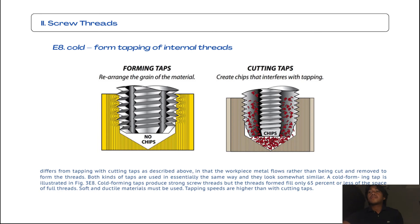The last subtopic from screw threads is called form tapping of internal threads. Form tapping of internal threads differs from tapping with cutting taps as described above, in that the workpiece metal flows rather than being cut and removed to form the threads. Both kinds of taps are used in essentially the same way and they look somewhat similar. A cold-forming tap is illustrated, as you can see in the example. Cold-forming taps produce strong screw threads, but the threads fill only 65% or less of the space of full threads. Soft and ductile materials must be used, and tapping speeds are higher than with cutting taps.